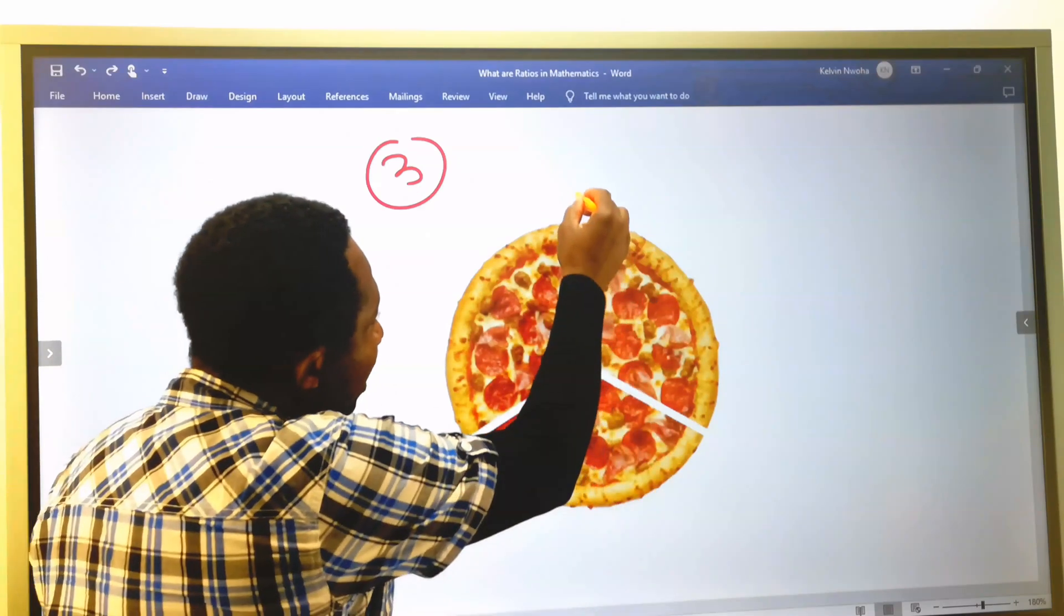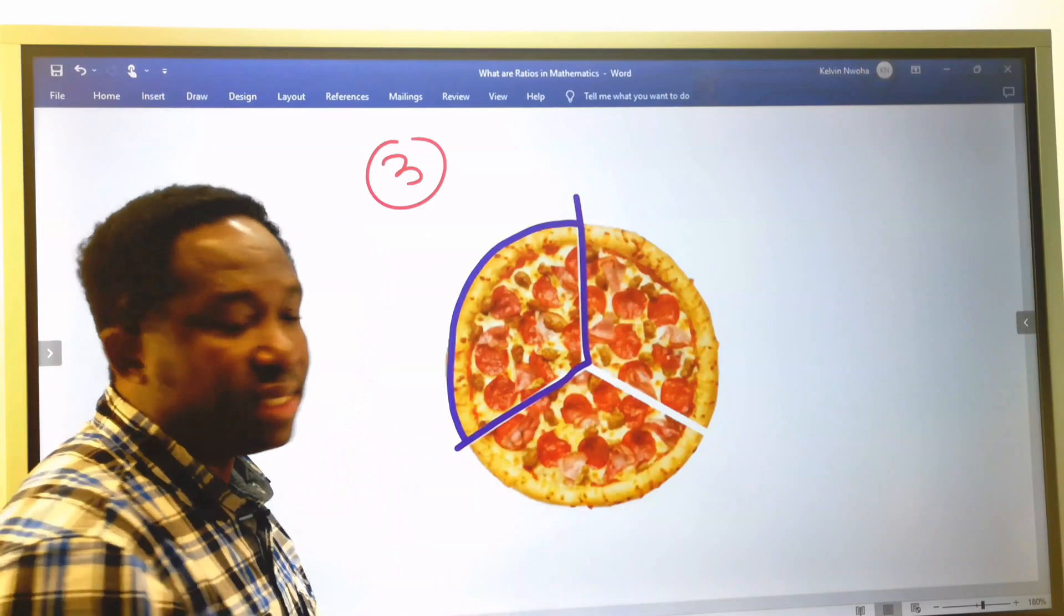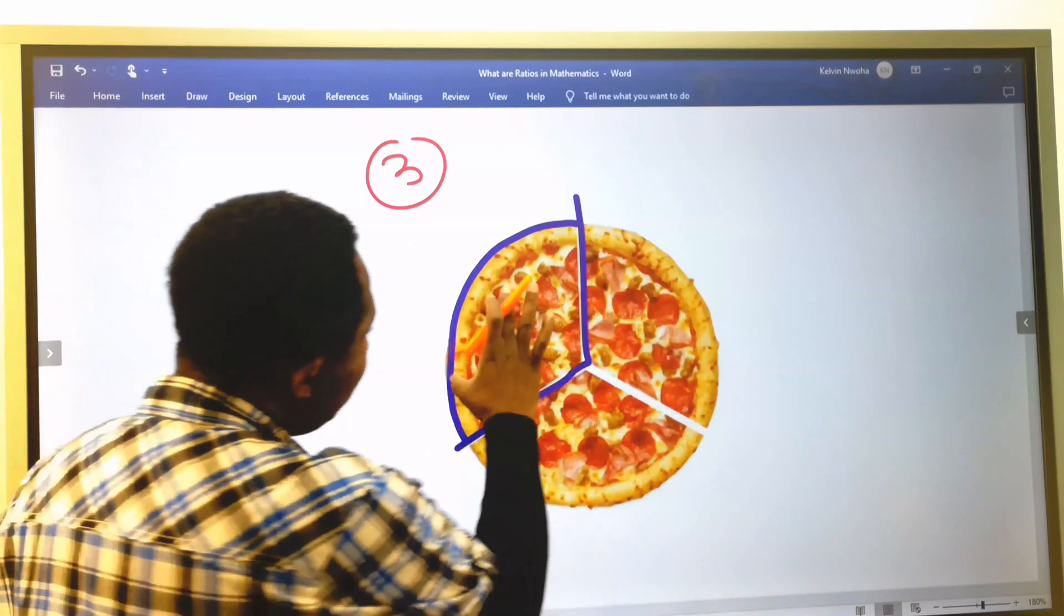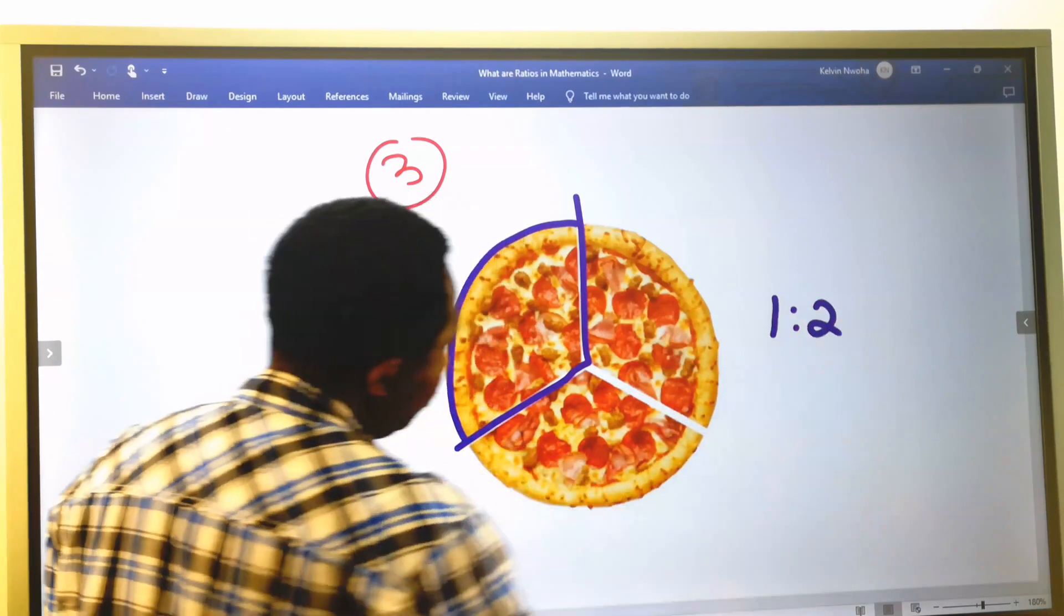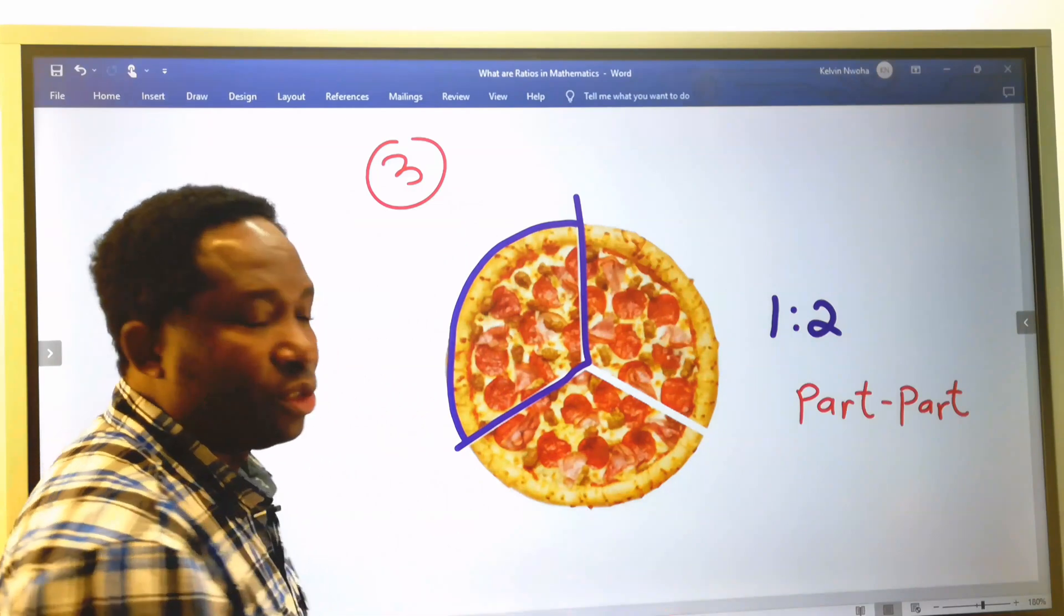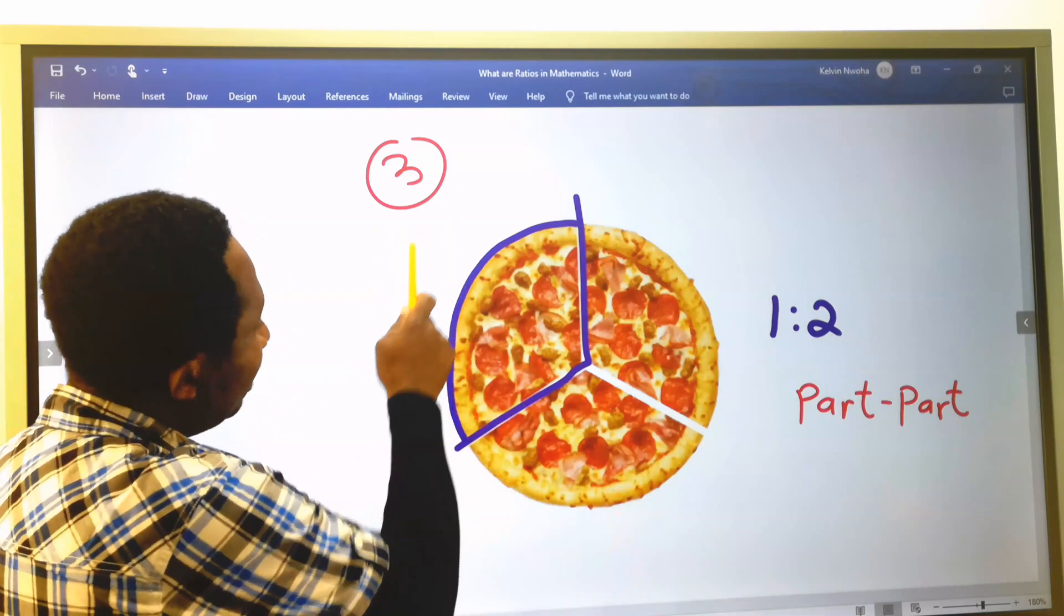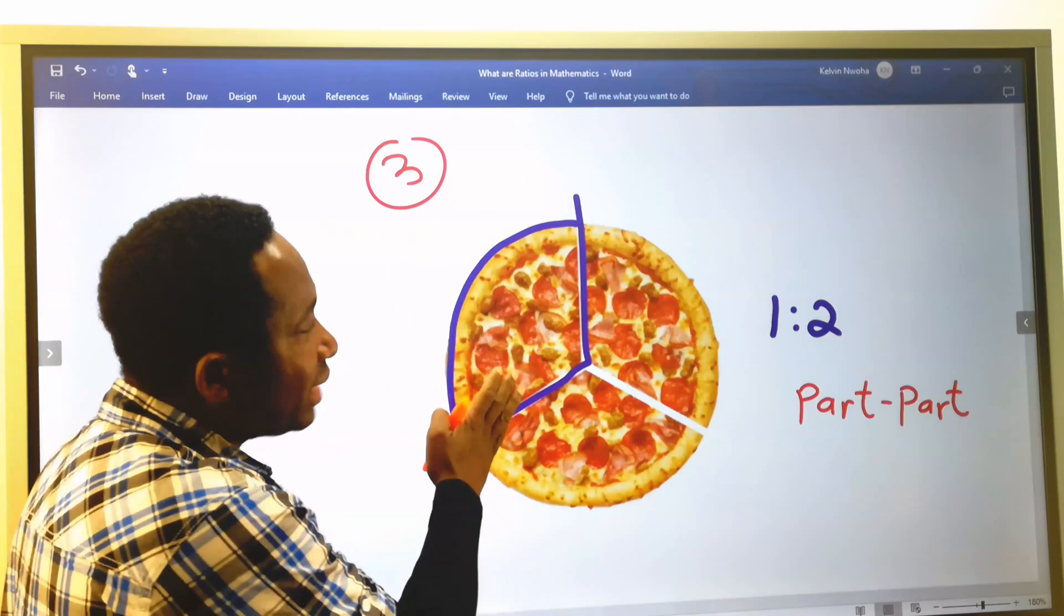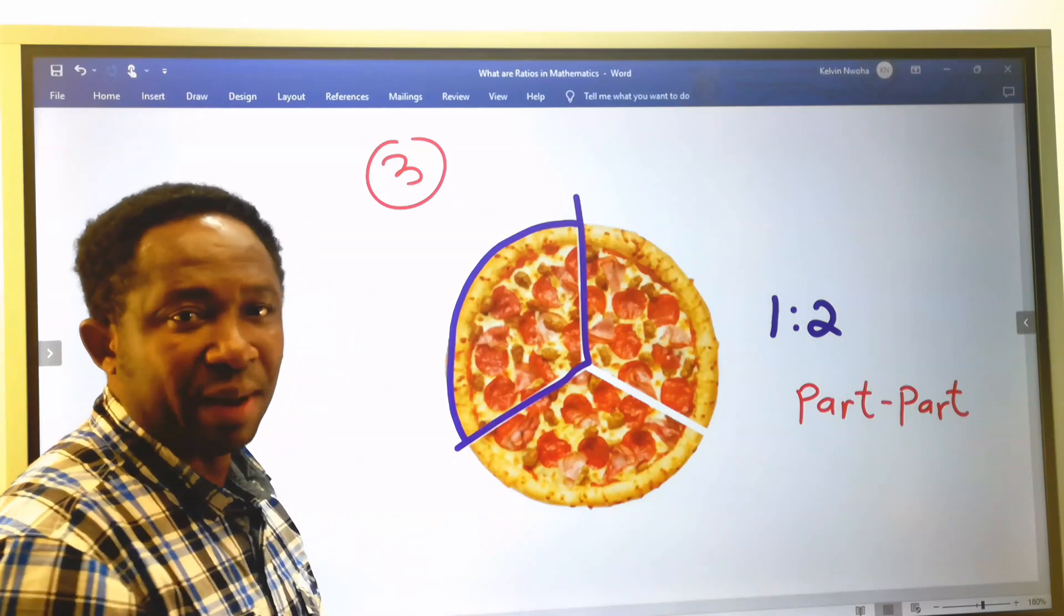But if I consider only one part of this pizza against these remaining parts, in ratio this is 1 to 2. This is considered as part to part, because I did not mention 3 in the comparison. When you compare a part of an item to the other remaining parts, it is part to part.